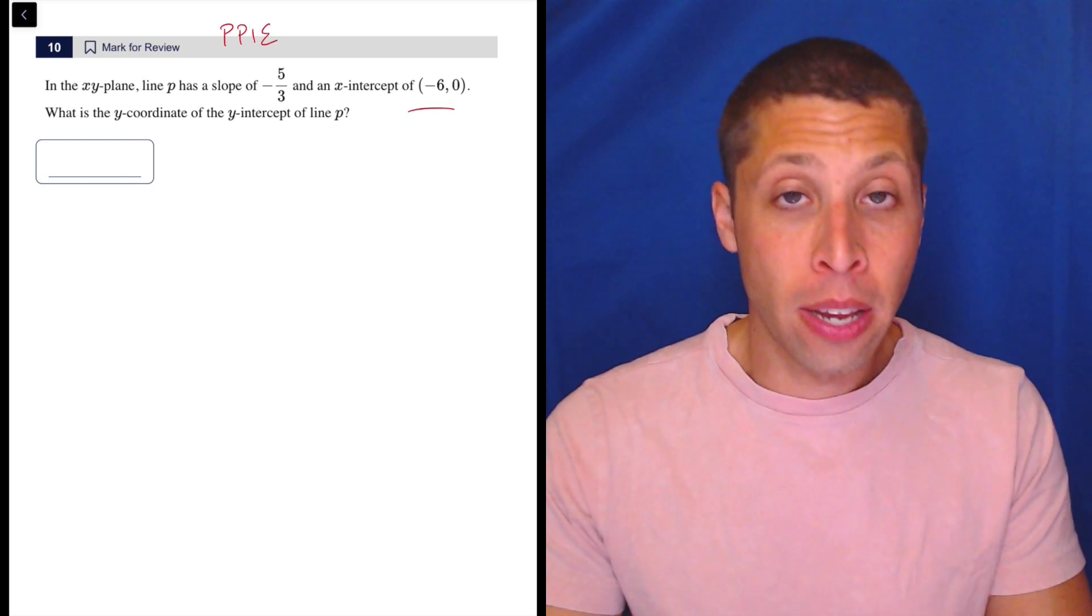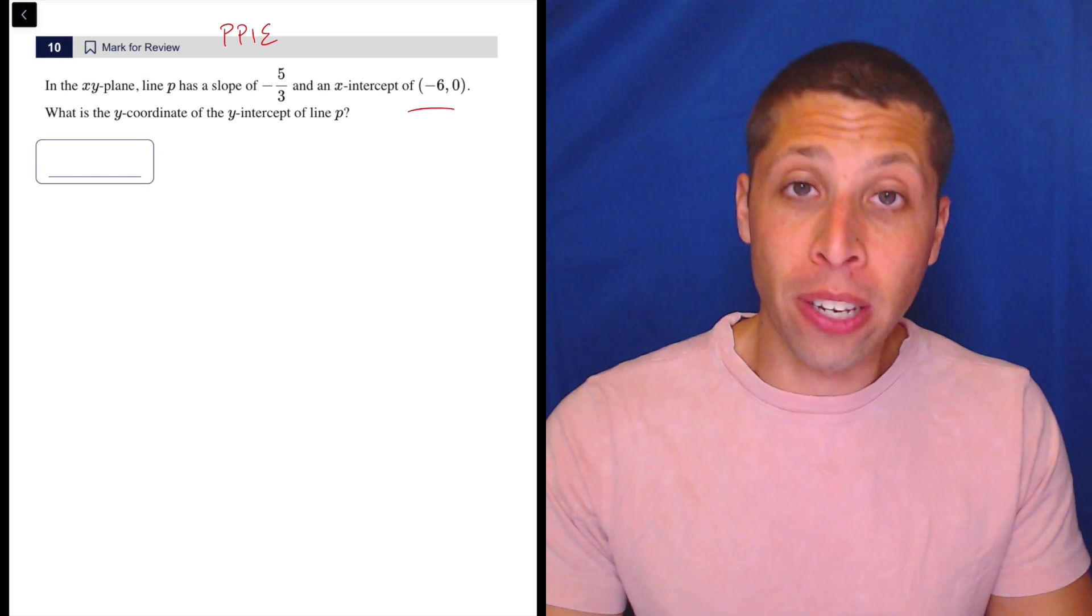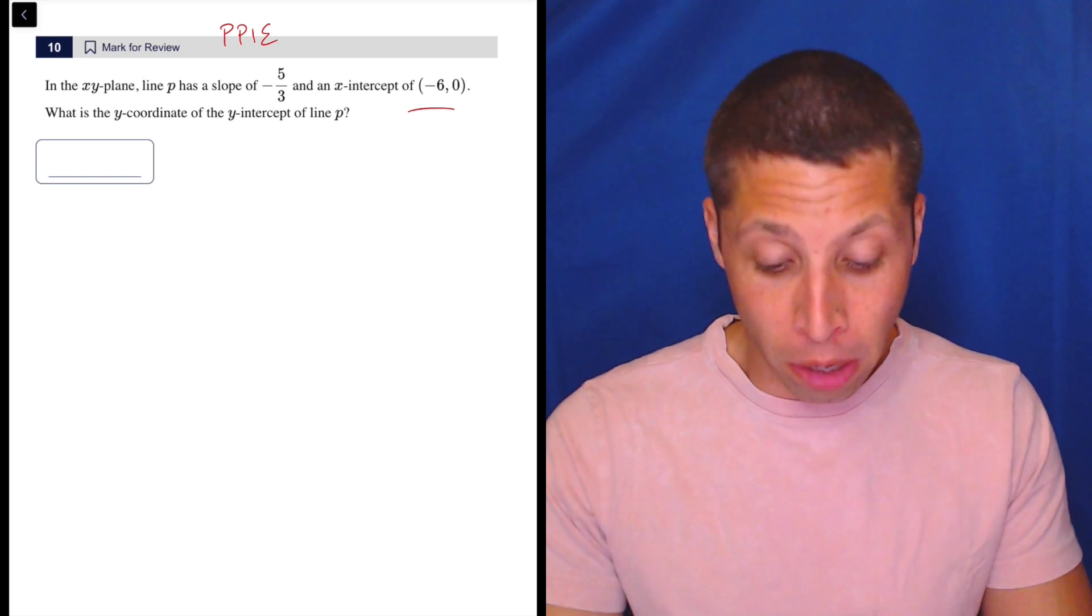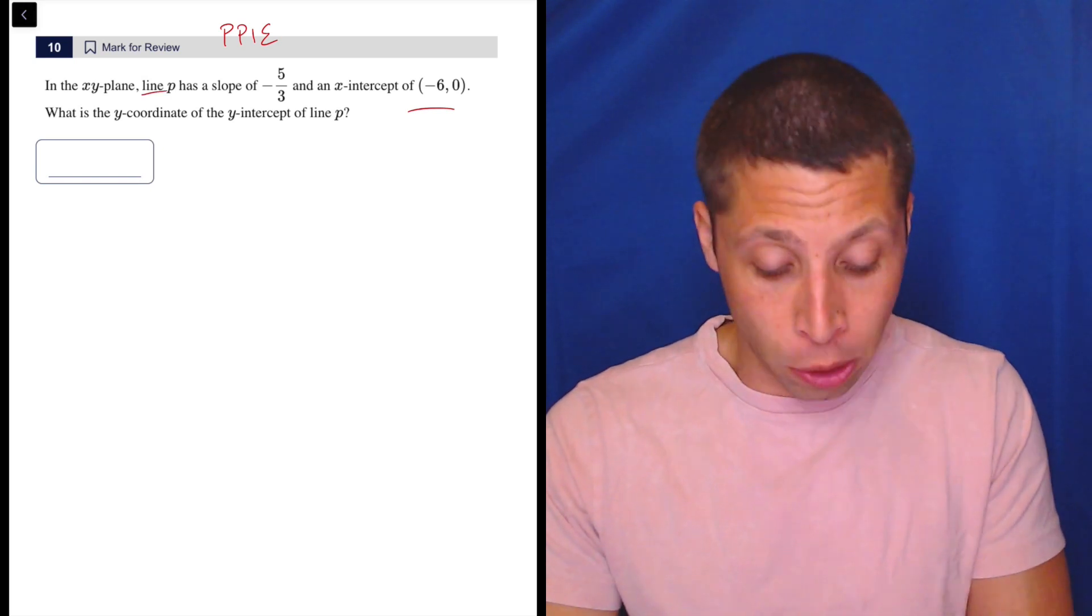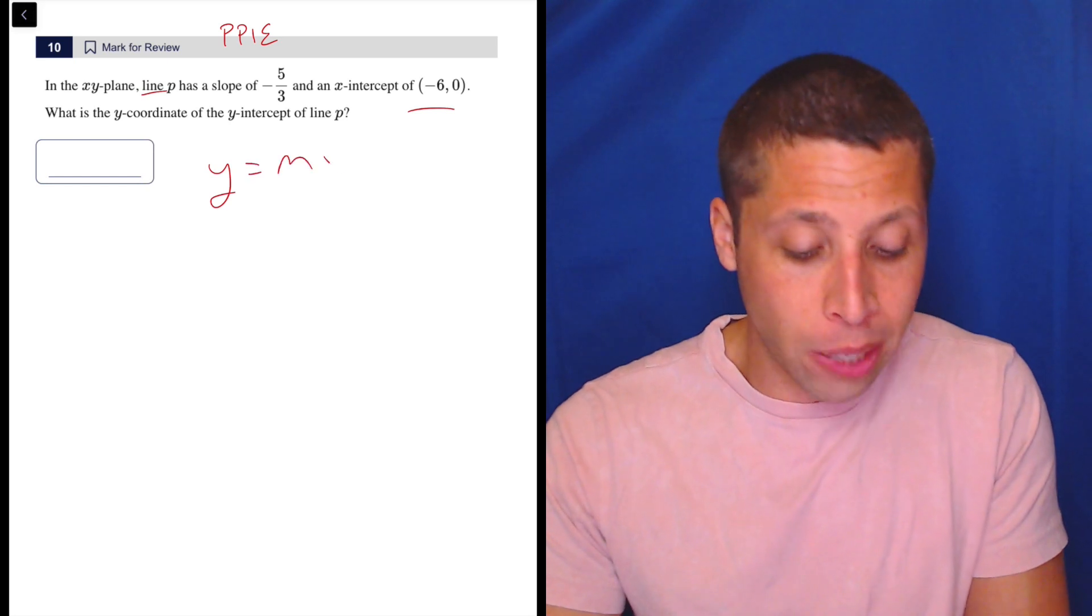I clearly have a point and I actually have an equation if I can just make it up, right? So they're talking about lines. So I know the linear equation. Just keep it simple. Y equals mx plus b.